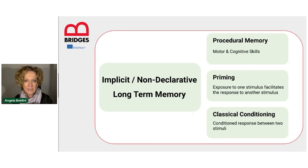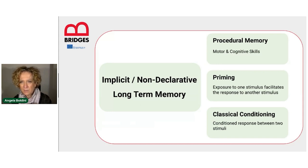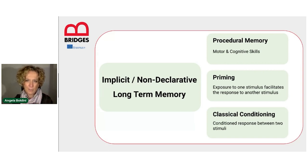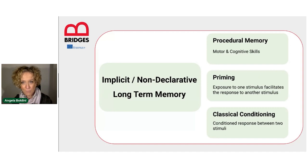The third and final type of implicit memory I mention here is the famous classical conditioning. This is the typical automatic association that, for whatever reason, we might create between a stimulus and a response — a stimulus and response that were not previously associated. The most famous example here is the experiment carried out by Pavlov with his dog: the dog that would start salivating as a response to a bell, even in the absence of real food. I'm sure you all know this famous experiment.